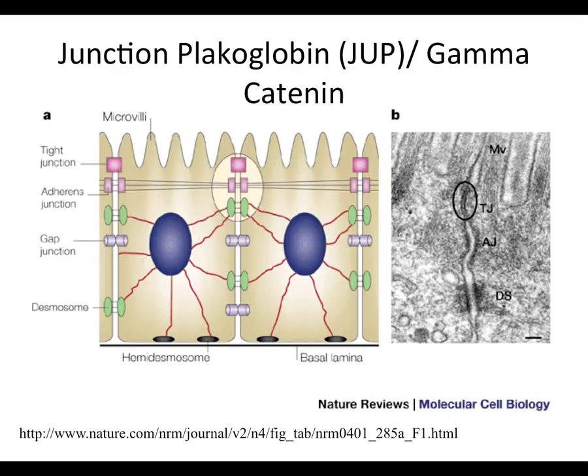One of my collaborators was working on junction placoglobin, or JUP — I'm going to call it JUP. It's also known as gamma catenin. He comes to me and says, hey Mike, I know this thing is important in aggressive lung tumors, that when you see a metastatic tumor — when these tumors spread — this protein basically gets knocked out. We don't see expression in most of the lung tumors anymore. But the problem is, we don't know what it does.